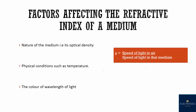Now, factors affecting the refractive index of a medium. Refractive index equals speed of light in air divided by speed of light in that medium. So the smaller the speed of light in that medium relative to air, the higher the refractive index. With an increase in temperature, the speed of light in the medium increases, so the refractive index decreases. With increase in temperature, the refractive index decreases.